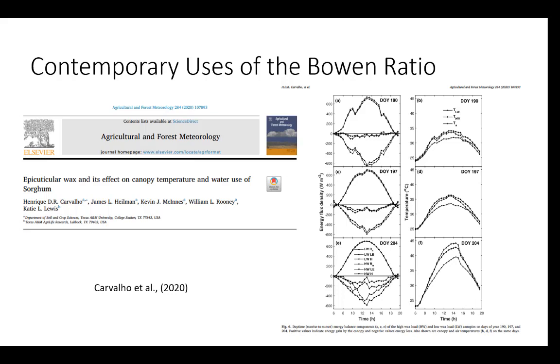But people still use the Bowen ratio to do very valuable studies. Just here's an example from 2020 showing the use of the Bowen ratio was actually used in this study to study the effect of cuticular wax on the water use of grain sorghum. And they use the Bowen ratio method to get the energy balance, study evapotranspiration, study how the cuticular wax affected the canopy conductance for water vapor. So still can be a very useful technique and it's quite a bit less expensive than other techniques that we'll talk about here in a minute, like eddy covariance or large aperture scintillometry.